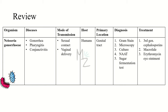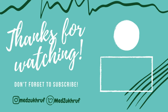Let's wrap up everything in this short table. The organism discussed is Neisseria gonorrhea, responsible for causing gonorrhea, pharyngitis, and conjunctivitis. It is transmitted via sexual contact or vaginal delivery. Humans are the only hosts, with primary location in the genital tract but also found in the nasopharynx and anorectal region. Diagnosis is based on gram staining, microscopy, culture, NAT, sugar fermentation test, oxidase test, and catalase test. It is treated with third-generation cephalosporins, macrolides, and erythromycin eye ointment. It has penicillin resistance and there is no vaccine. Hope you enjoyed it — feel free to leave suggestions in the comments, and hopefully we'll see you in the next video.